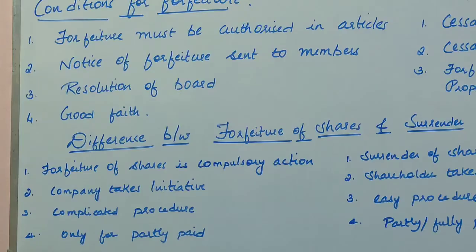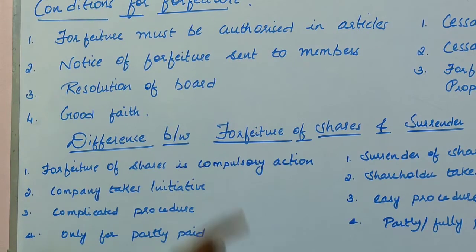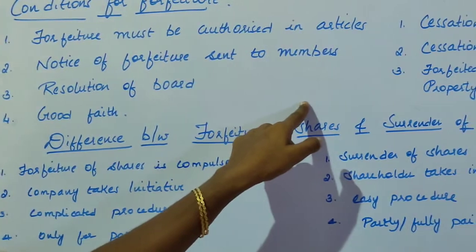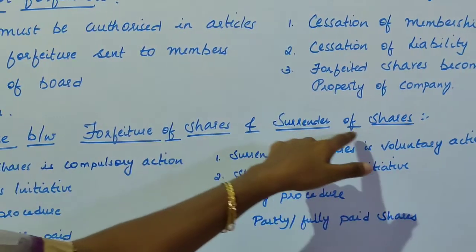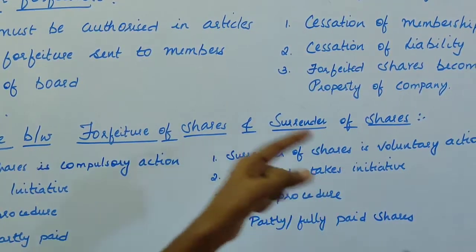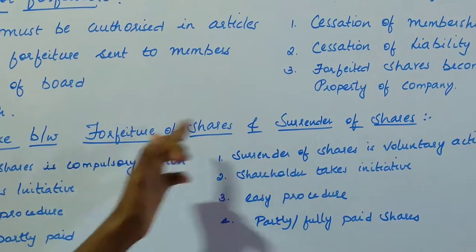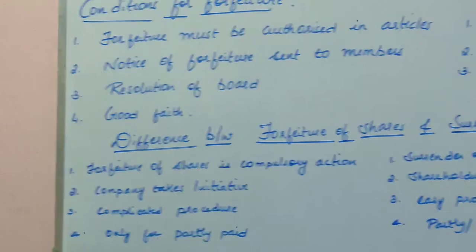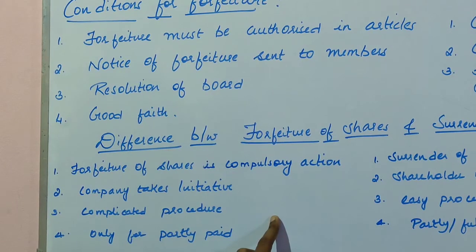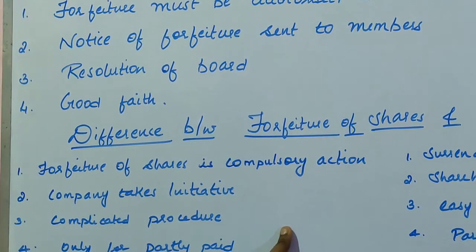Now coming to the difference between forfeiture of shares and surrender of shares. Forfeiture means cancellation of ownership of shareholders, whereas surrender of shares means when shares are voluntarily given by the shareholder to the company. The first difference is that forfeiture of shares is a compulsory action taken by the company in order to get its unpaid amount of calls paid.